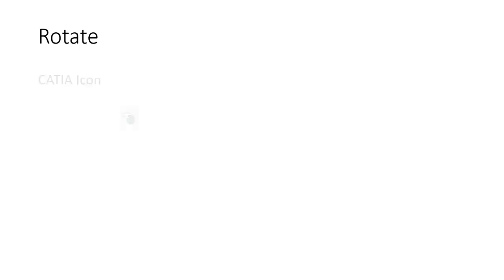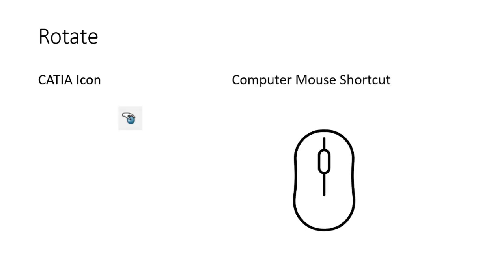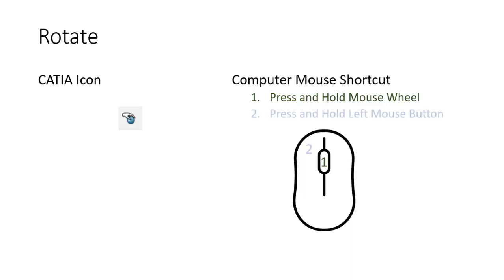Next we're going to talk about how to rotate, which turns the view around either a horizontal or vertical axis. Here is the CATIA icon — it's a hand hovering over a ball. For the computer mouse shortcut, it's almost identical to zooming in. We press and hold down the mouse wheel — same first step. But for the second step, we press and hold down the left mouse button rather than pressing and releasing it. So both the left mouse button and the mouse wheel are held down simultaneously.